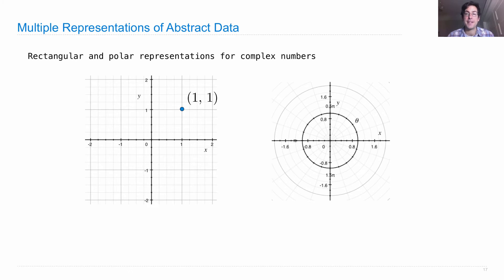The polar representation is the same plane, so a point in the same position is the same number, but that number is described in a different way. That same number in the polar representation would be described as the distance between the origin and that point, which is the square root of 2.